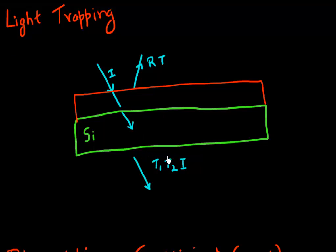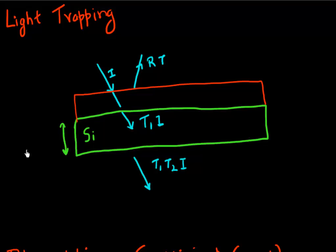But we have this other problem: even if we get a lot of light into the silicon, we want to keep our material cost lower. So the amount of silicon we use is only a few hundreds of microns in thickness at maximum. And what happens if light escapes through the other side of the silicon?